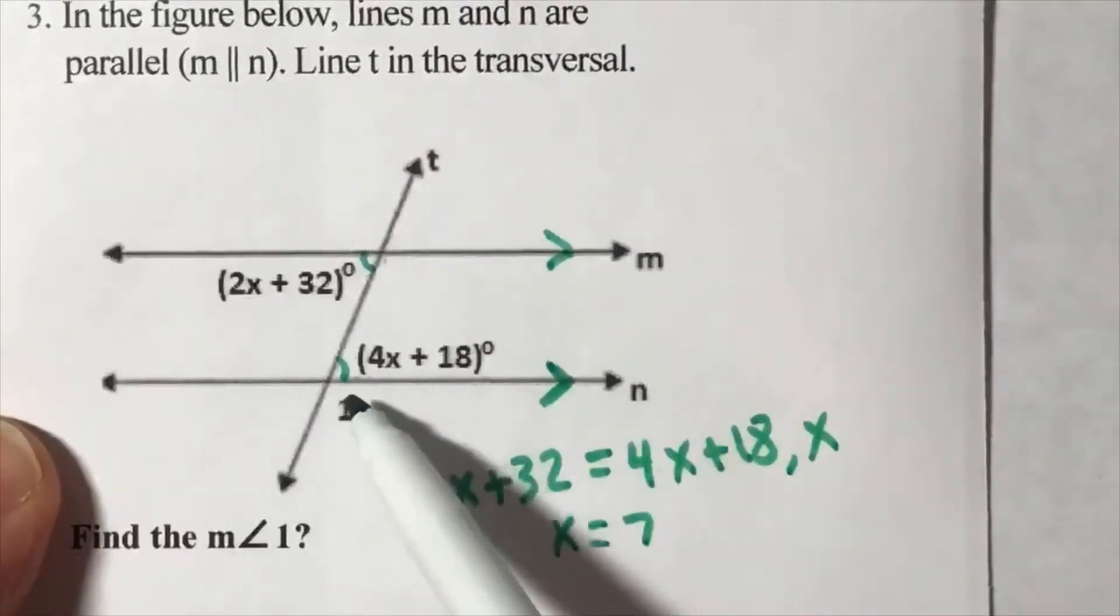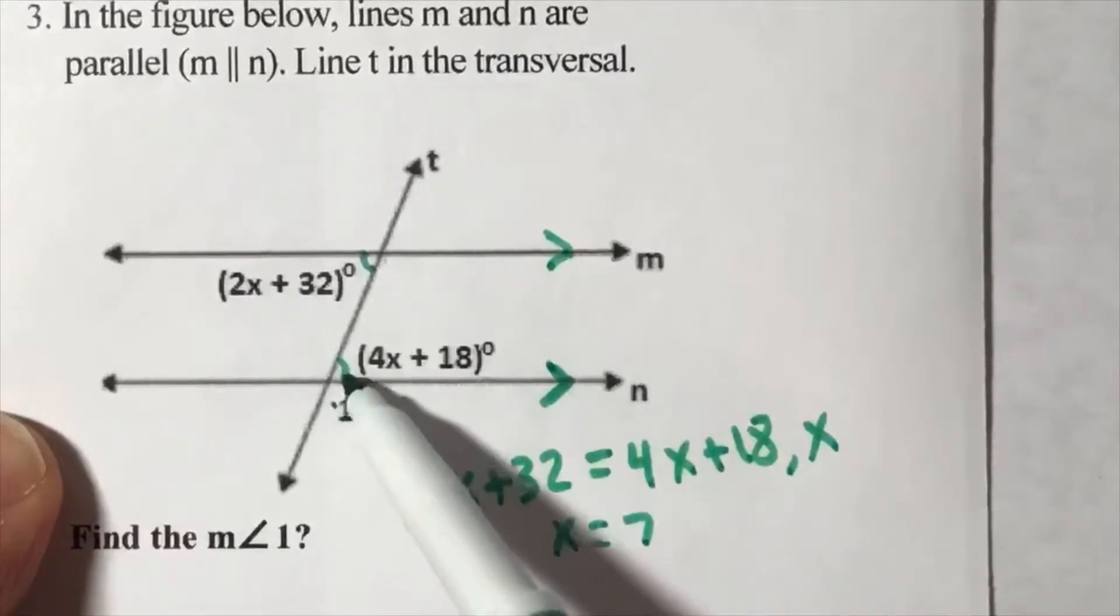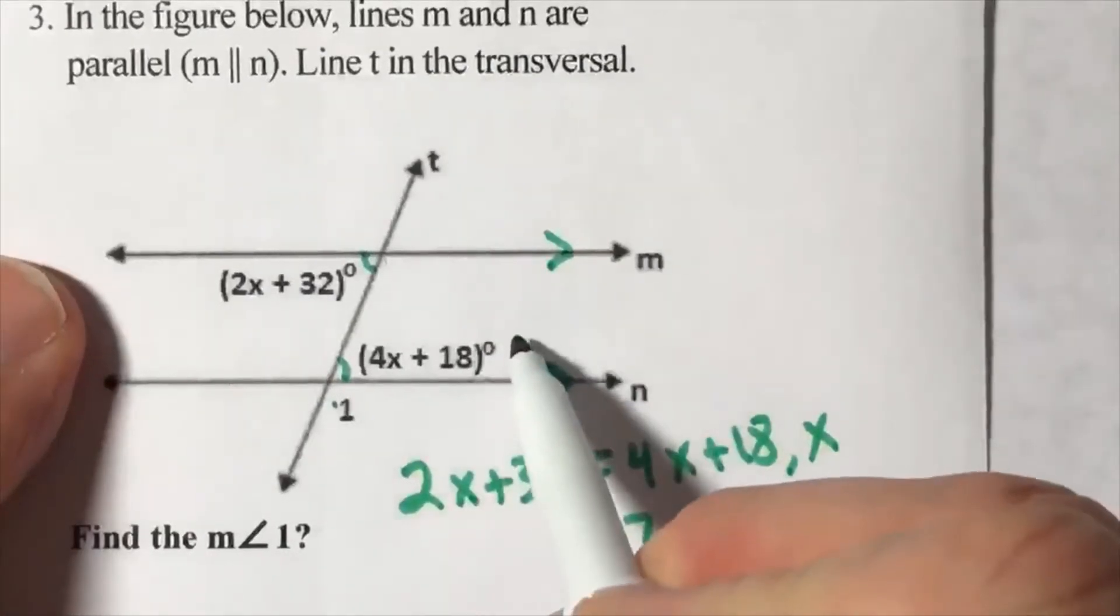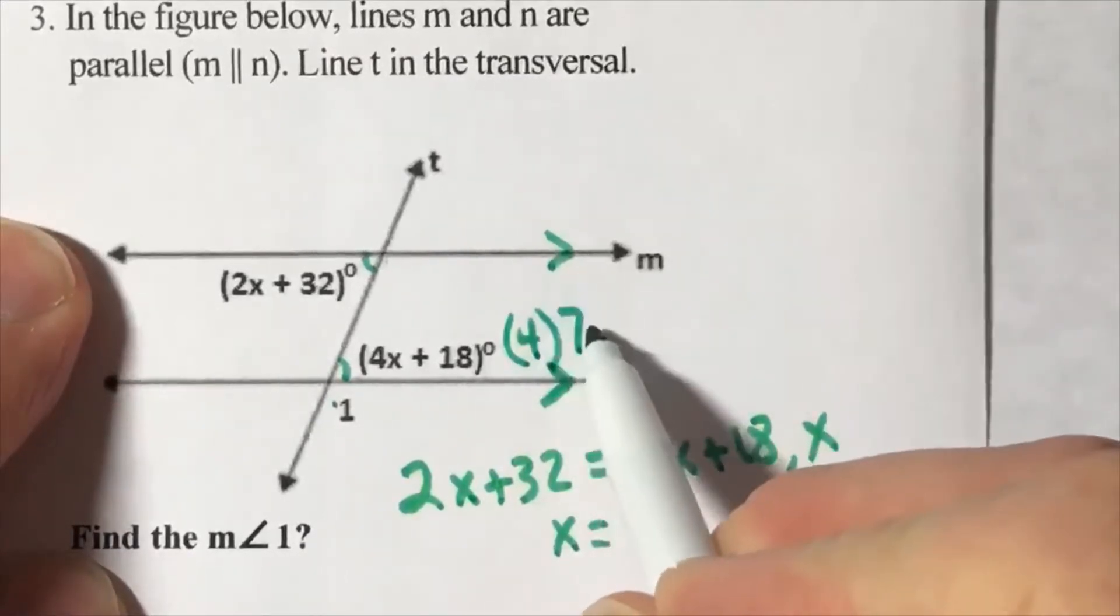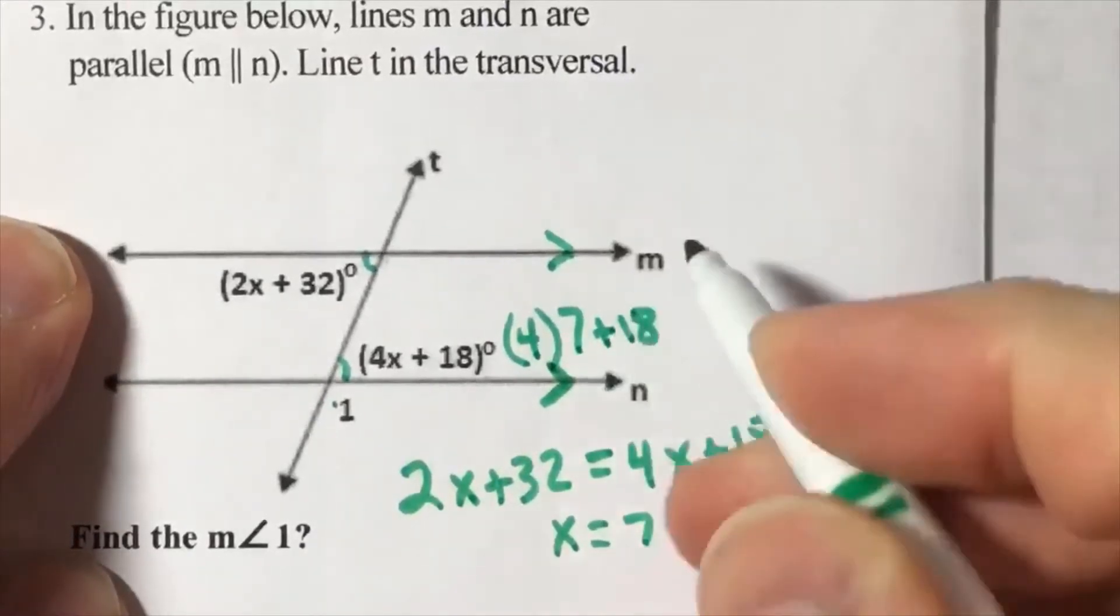Now look, we've got to find angle one. Now you've got to recall these two angles that are side by side are supplementary. And plug this in, so this is going to be 4 times 7 plus 18.